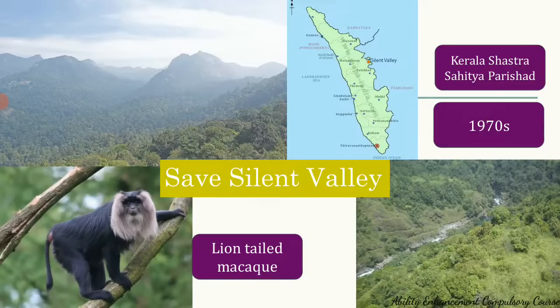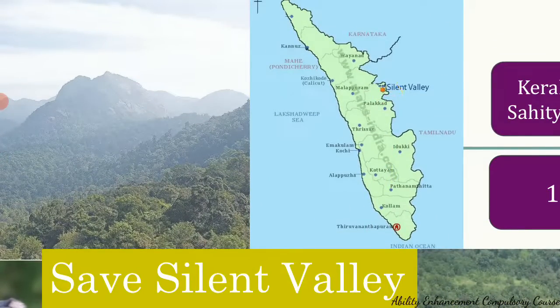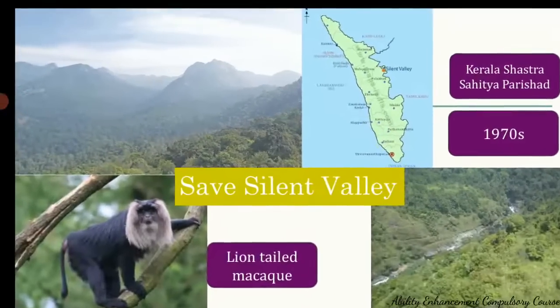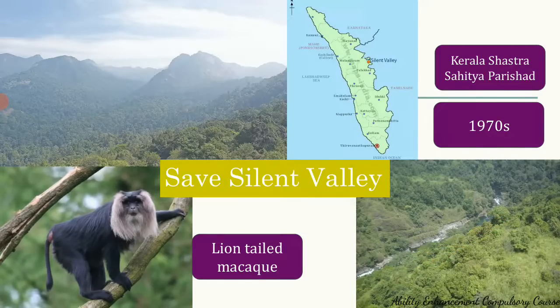Another project associated with dams is the Save Silent Valley movement. Silent Valley is a region in the southern state of Kerala, located in the Western Ghats. A hydroelectric dam project was planned on the Kunti River, which flows through the Silent Valley region. Work on the dam started back in the 1970s, with construction beginning in 1976.